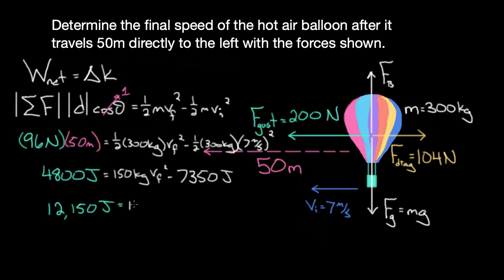That equals 150 kilograms times vf². Dividing 12,150 by 150, you get exactly 81, which equals vf². Taking the square root of that, you get exactly 9. So the final velocity of this hot air balloon is 9 m/s.